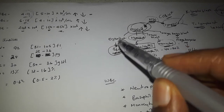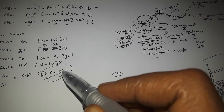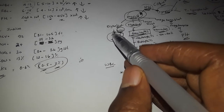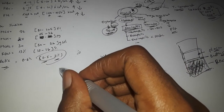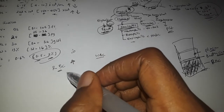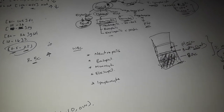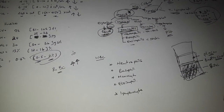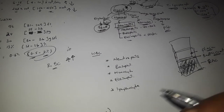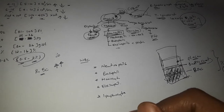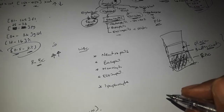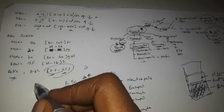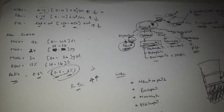The reticulocyte percentage is normally about 1–2% of the total red cell count. If the reticulocyte percentage is less than 2%, that is within the normal range. The reticulocyte count normally represents 0 to 2% of the total red cell population.